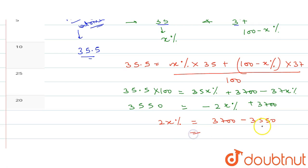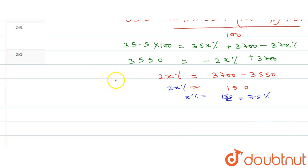So 3550 equals 35x plus 3700 minus 37x. When we simplify this, we get 3550 minus 3700 equals negative 2x. This gives us negative 150 equals negative 2x. Therefore, x equals 150 divided by 2, which equals 75. So x is 75 percent.